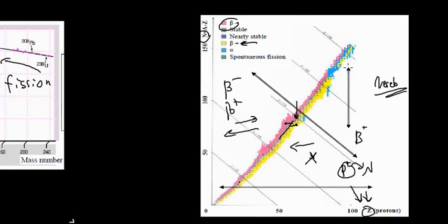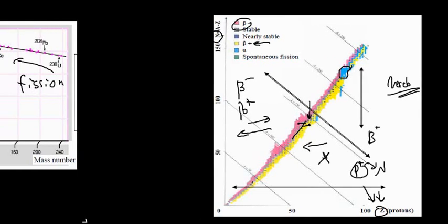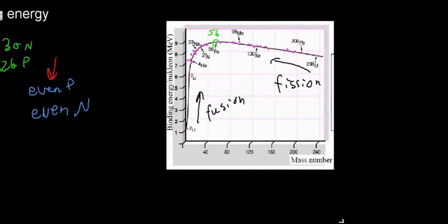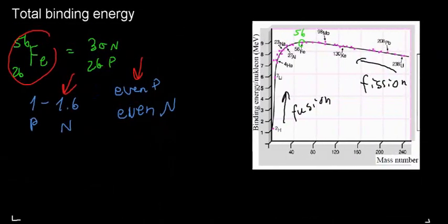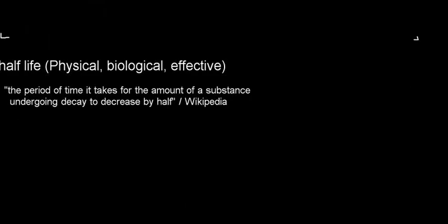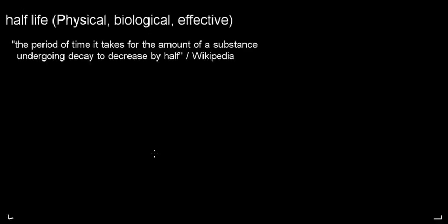For alpha decay, the nucleus loses both protons and neutrons, so those isotopes move diagonally — down along both axes — toward the stable region. That covers what is going on with that graph. Now I'll finish with the concept of half-life. The definition I'm using says: half-life is the period of time it takes for the amount of a substance undergoing decay to decrease by half.